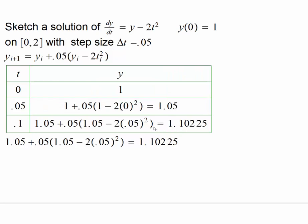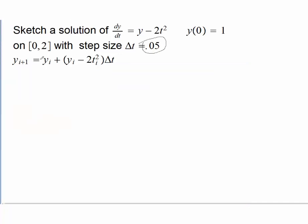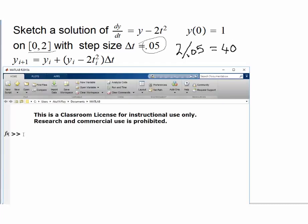We are going to have MATLAB do all this computation for us. Let's bring up the MATLAB command window. Remember, we are going in steps of 0.05 on the interval [0, 2]. So we need 2 divided by 0.05 — that is 40 steps. To accommodate that, let's ask MATLAB to create 41 values of t, and equally many values for y.